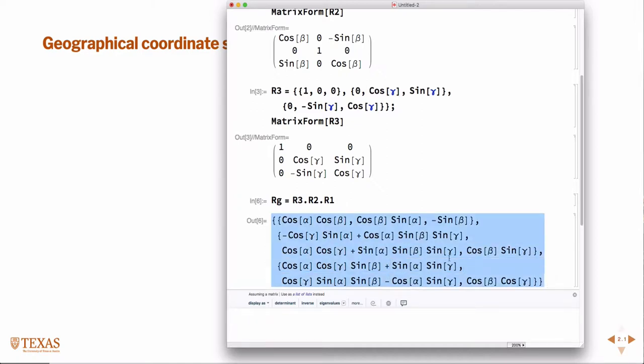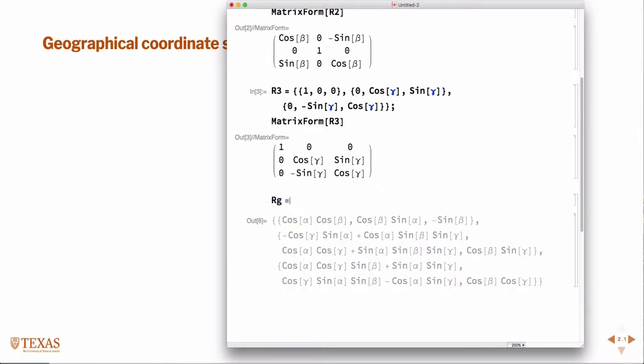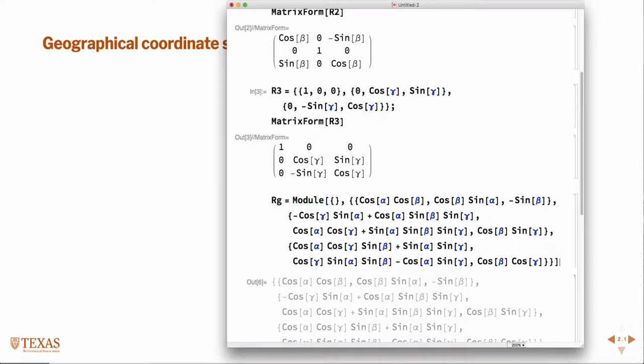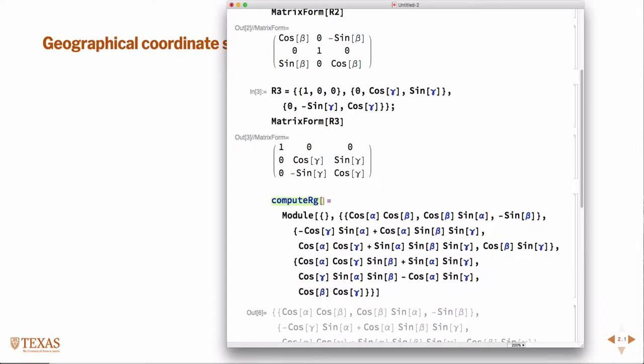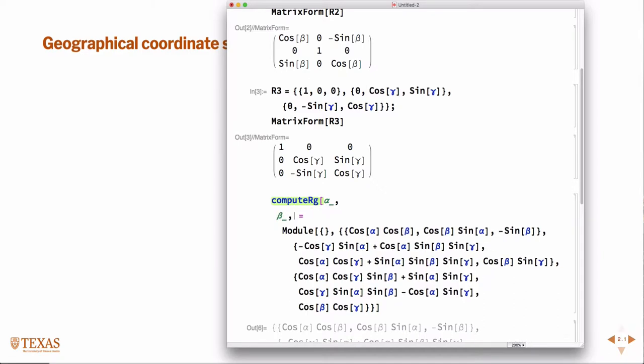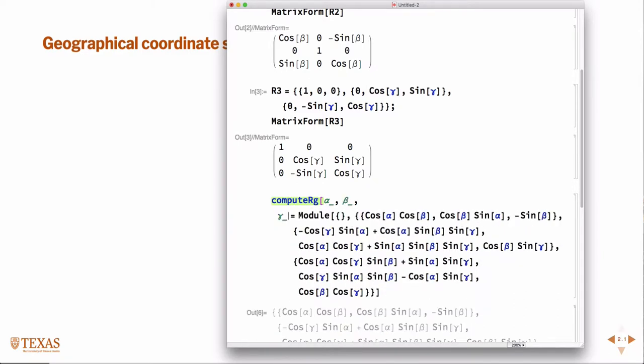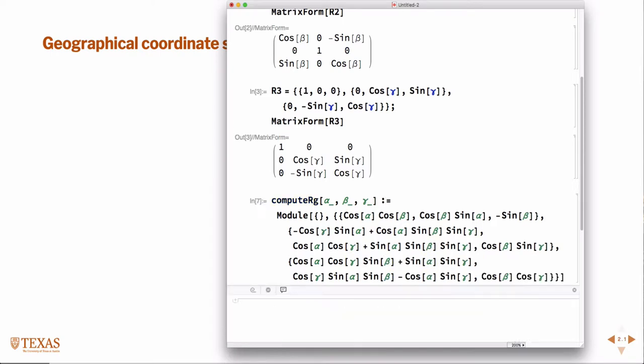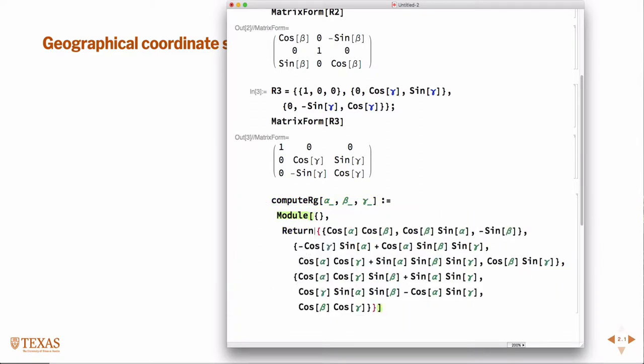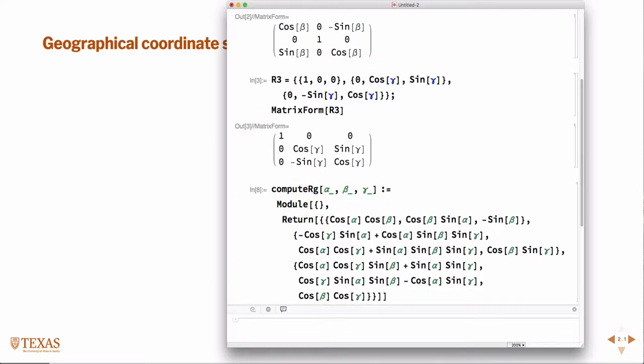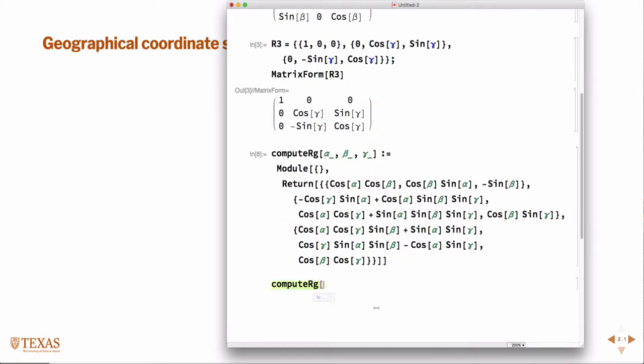All I have to do is, so in Mathematica the syntax for functions is module. I'm going to make a module called ComputeRg that takes the arguments alpha, beta, gamma and then returns this thing. So now, just like that, I have a function that will never make a mistake.